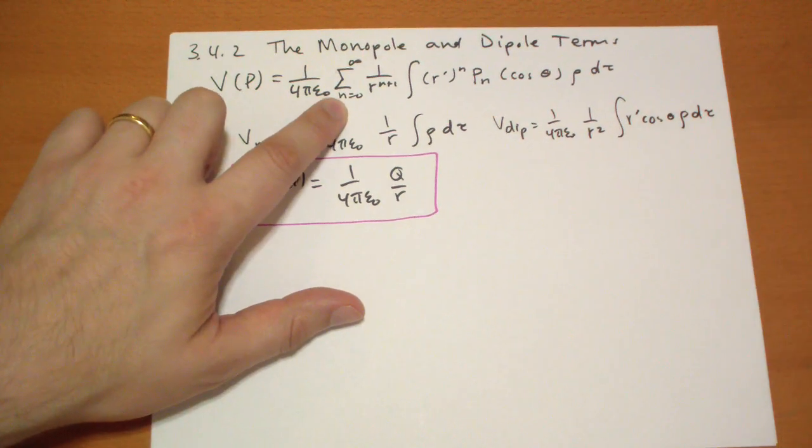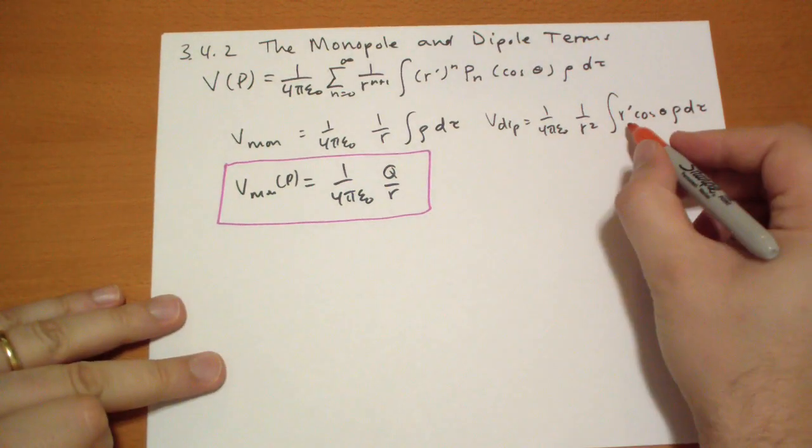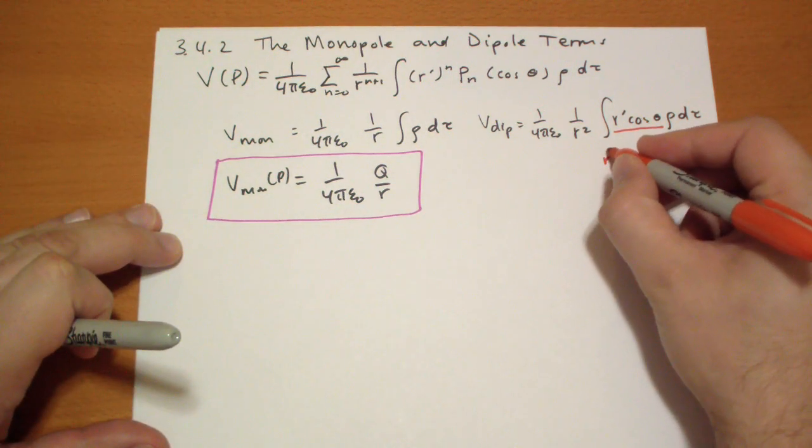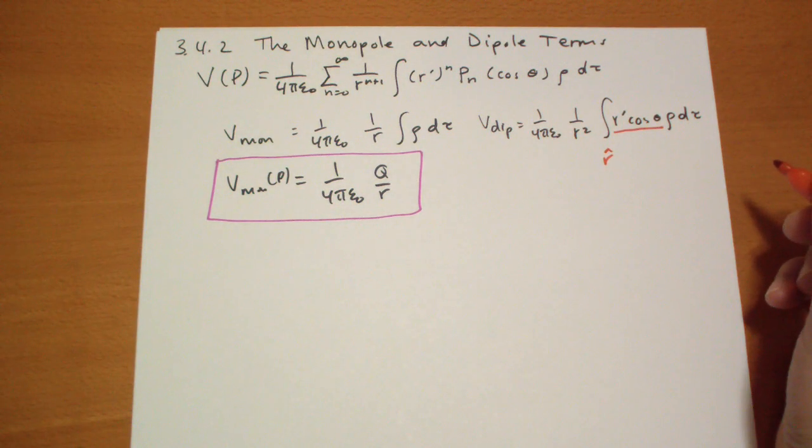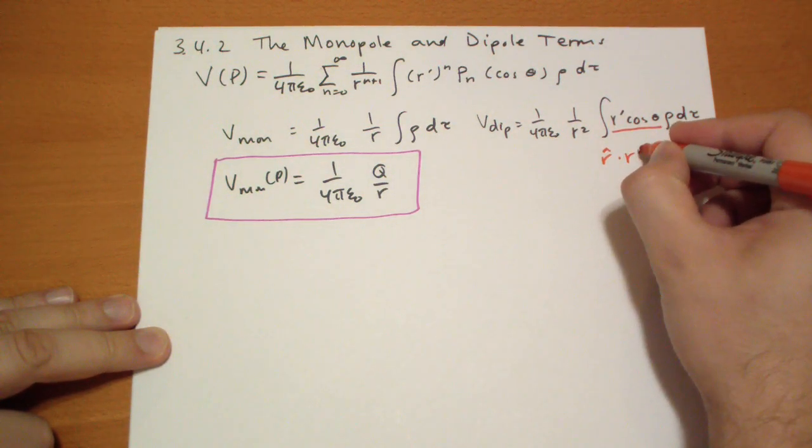Now if you look really hard at this term, the r prime cosine of theta, that could be rewritten as the simple function that is just r hat. That's the direction towards the point that we're interested in. And the dot product with r prime vector.